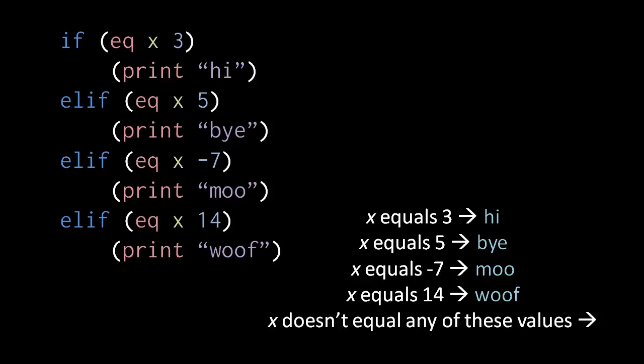So we effectively have five mutually exclusive cases: when x equals 3 we print high, when x equals 5 we print by, when x equals negative 7 we print mu, when x equals 14 we print woof, and when x doesn't equal any of those values we don't print anything, because we've skipped over the bodies of each clause.